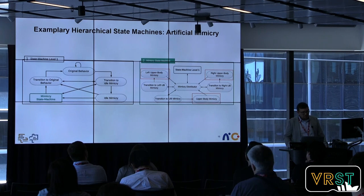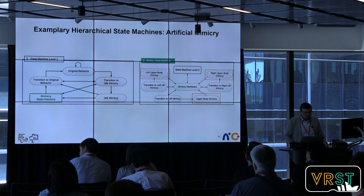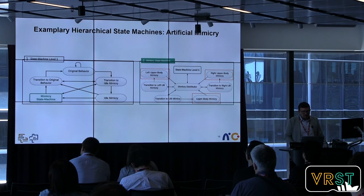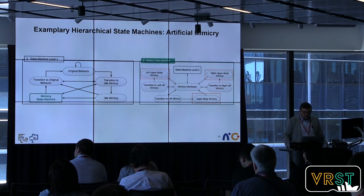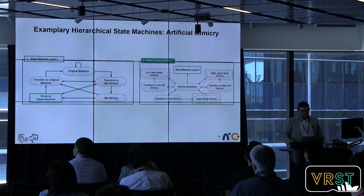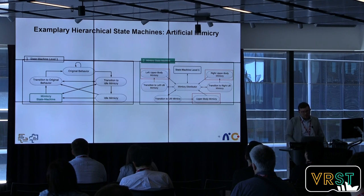Hierarchical state machines decide upon the augmentation. The state machine has different behaviors: the original behavior, idle states to transform, and the actual mimicry behavior. Within the mimicry state, a substate machine decides which part of the upper body motion gets mimicked. We exclude complex or semantic gestures using a complexity analysis — for example, you seldom move your arms dramatically when listening, so such states are excluded.